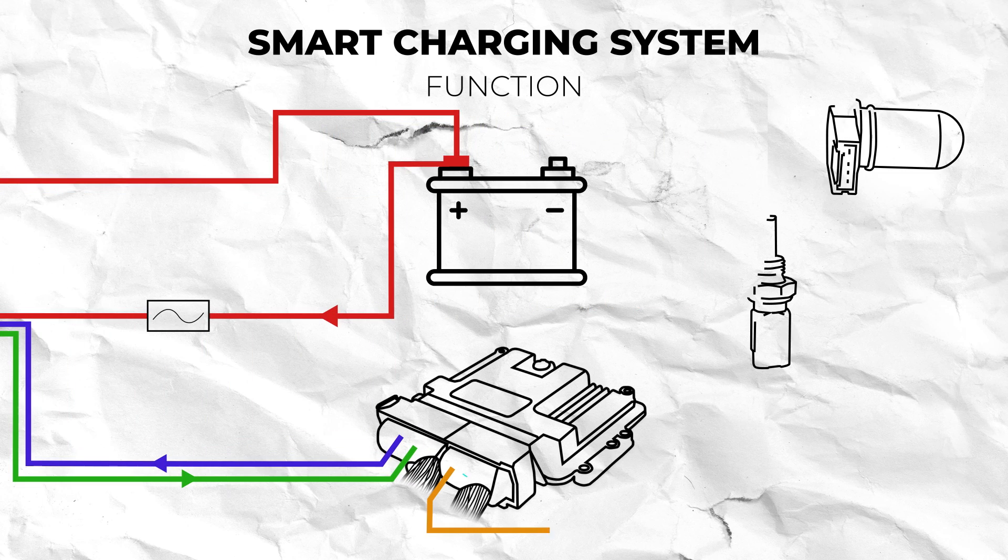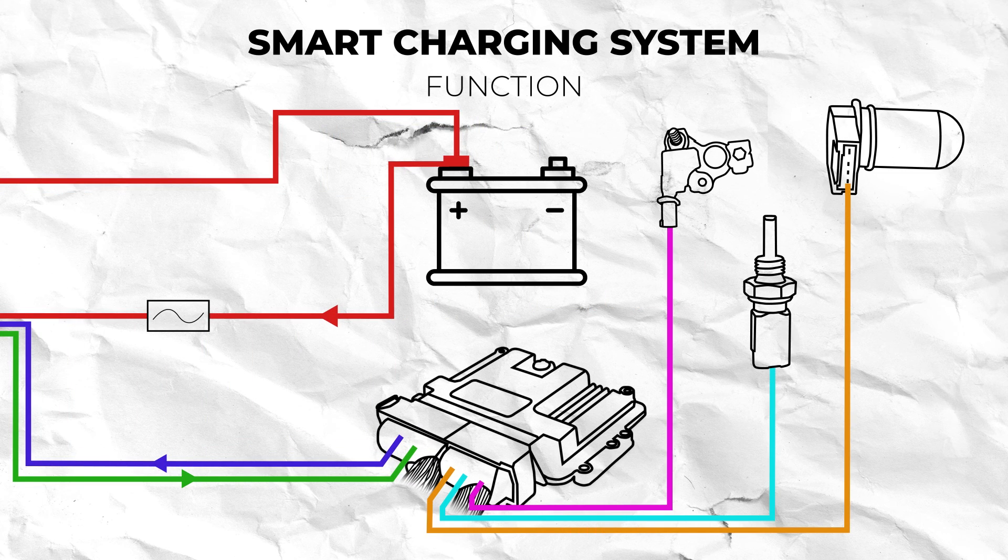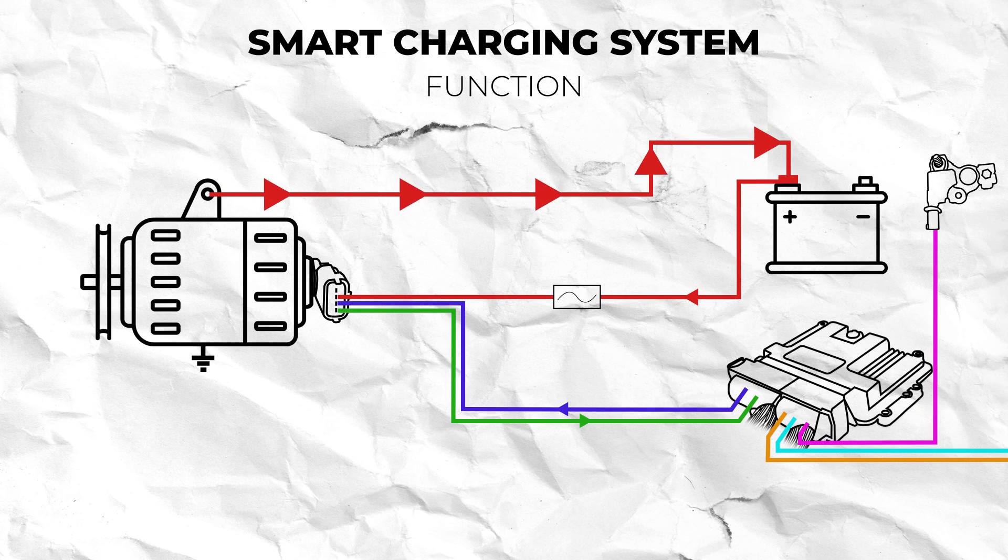The ECU uses data from various other sensors on the vehicle including the electronic battery sensor to determine the alternator's output voltage to adequately charge the battery under different loads and conditions.